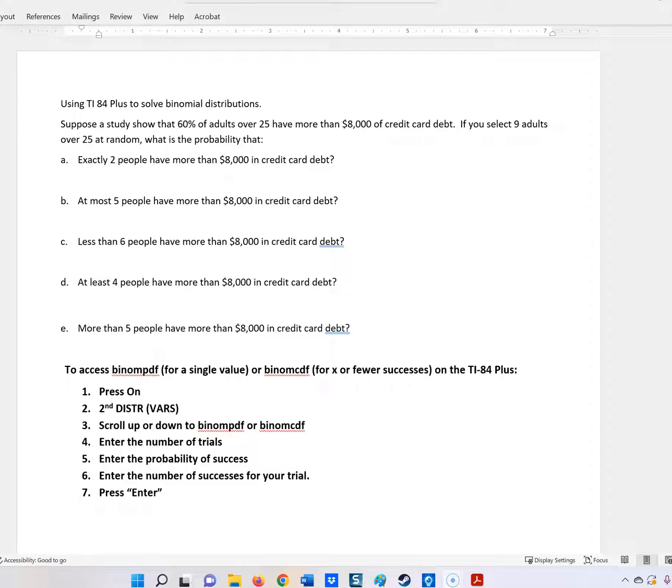This says that a study shows that 60% of adults over 25 have more than $8,000 of credit card debt. If you select 9 adults at random, what is the probability that exactly 2 people have more than $8,000? At most 5 people? Less than 6 people? At least 4 people? Or more than 5 people? We want to look at all those examples, and we're going to be using the binomial PDF for a single value and the binomial CDF for X or fewer successes.